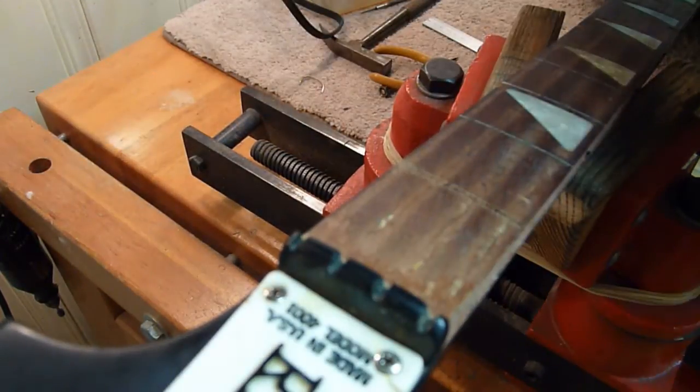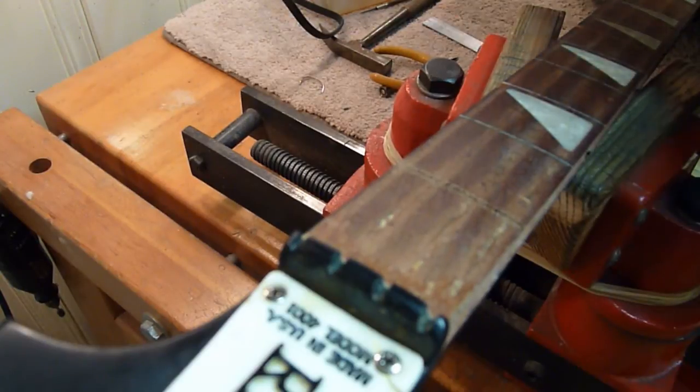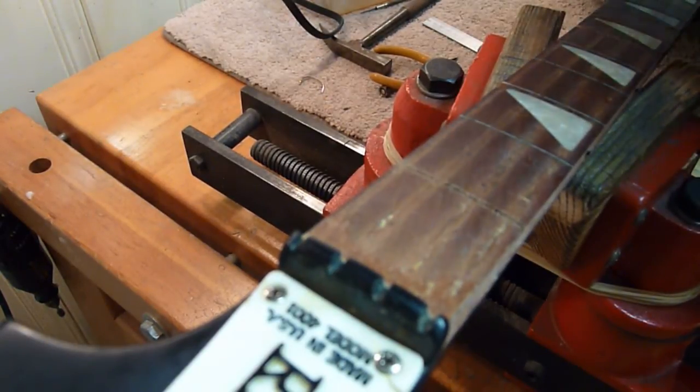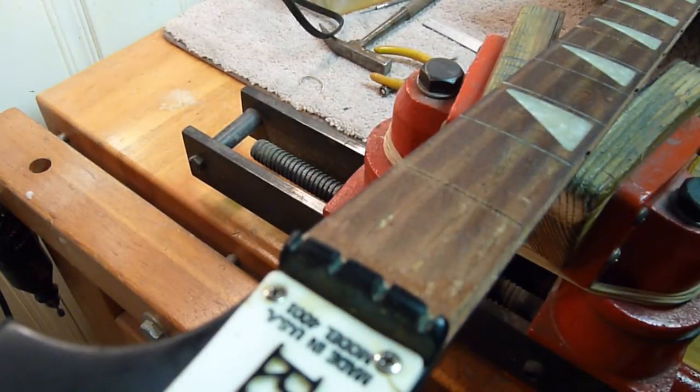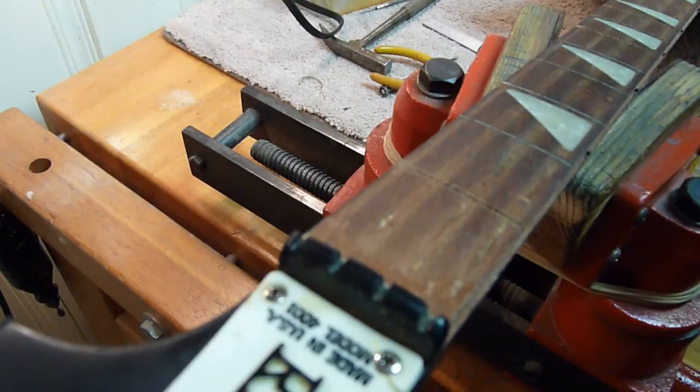Just spread it over the chipped area, and that will fuse everything back together and prevent it from chipping even more when I go in there with a fret slot saw to deepen the slots.